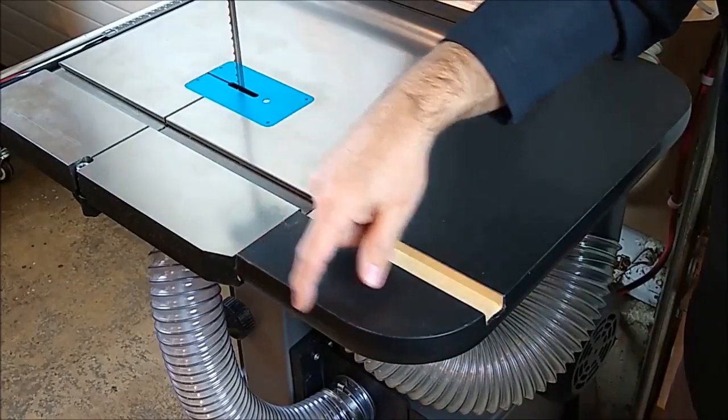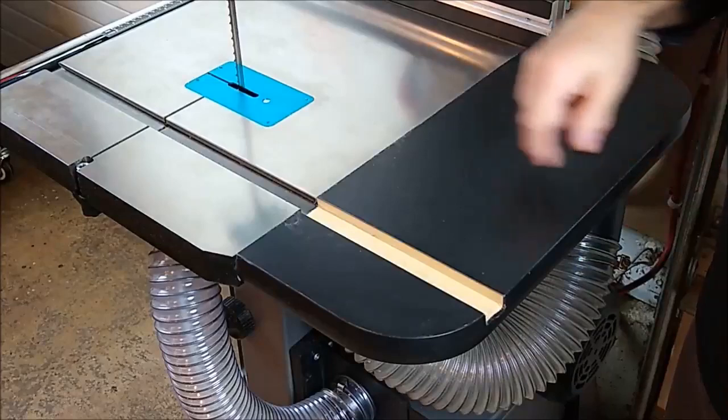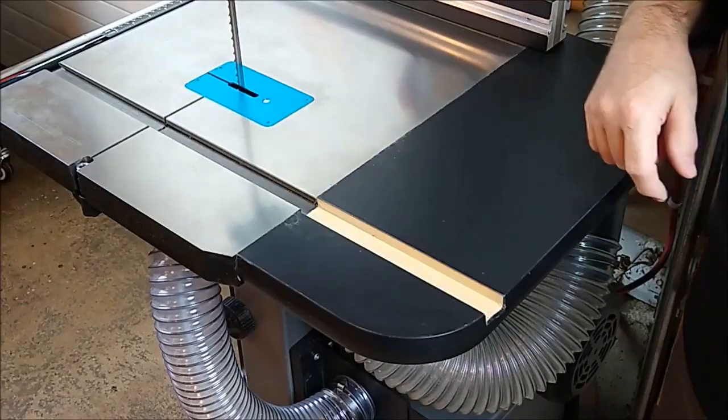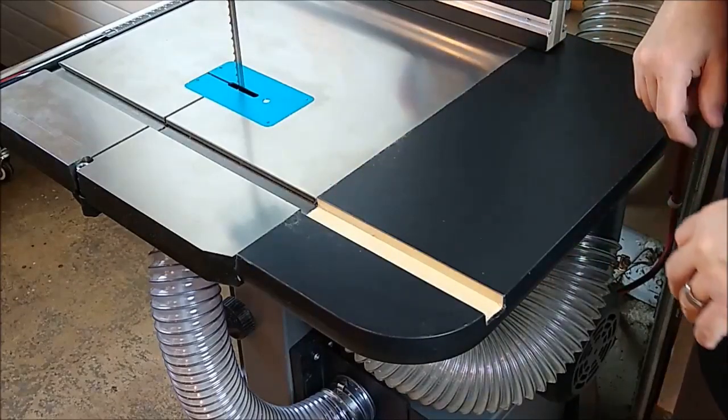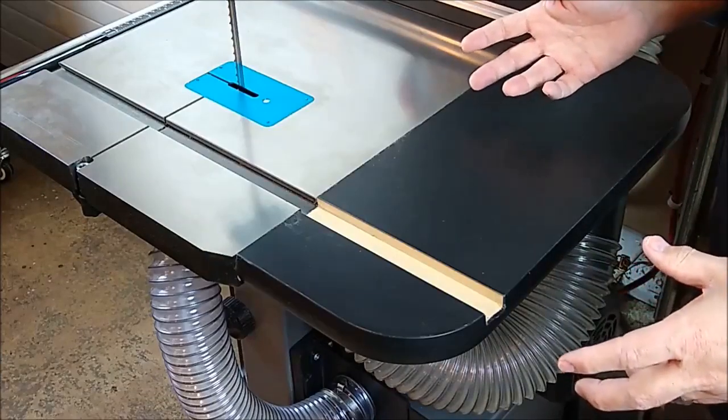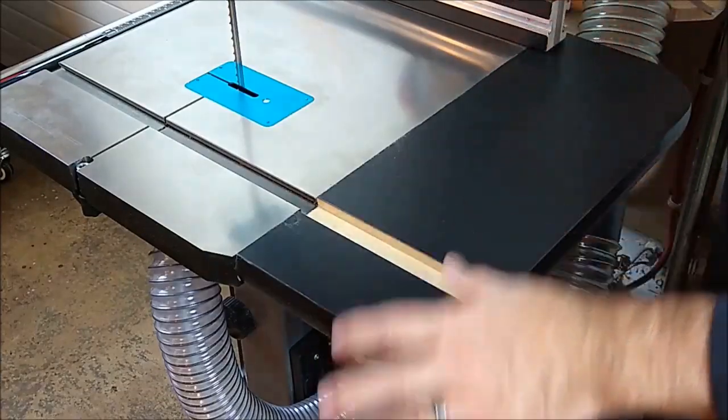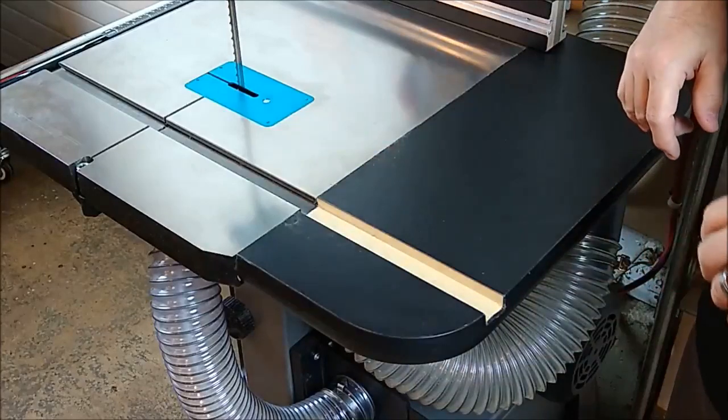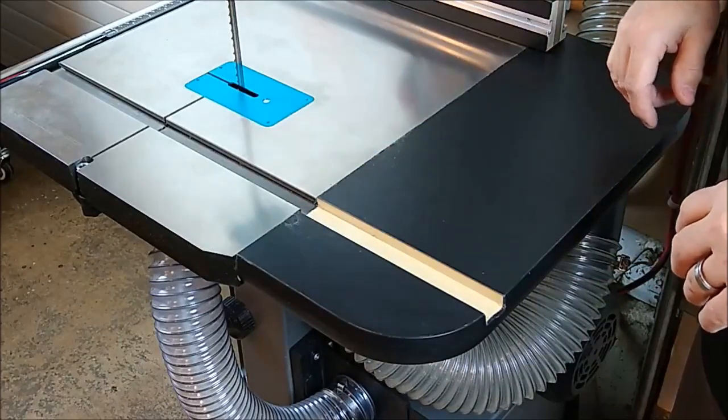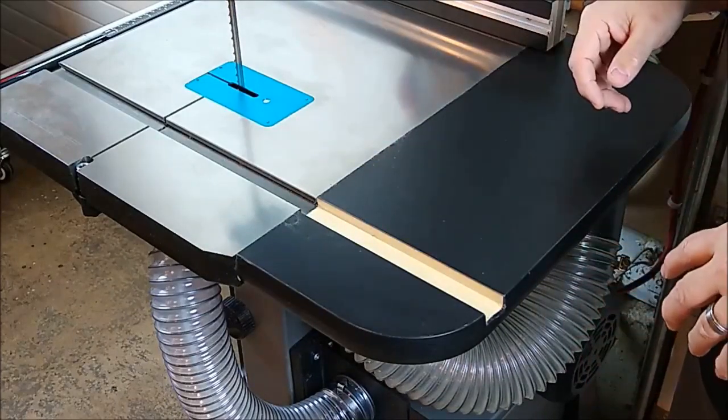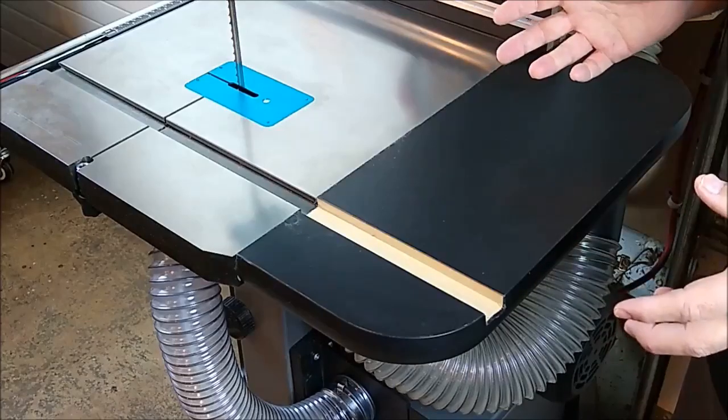It's got a T-molding that helps finish things off and a little groove that's plowed to accept the miter gauge. And the important thing to note about this is the outfeed table does not interfere with table tilting either left or right. It does not interfere with blade changes and it does not interfere with dust collection.